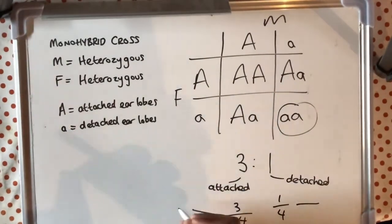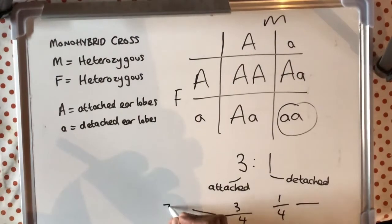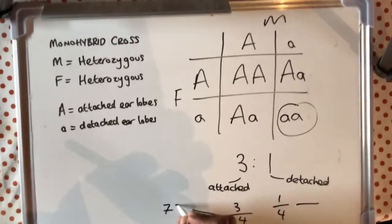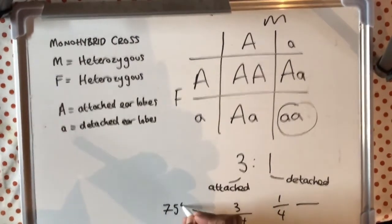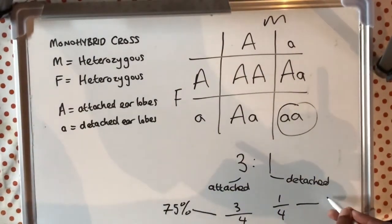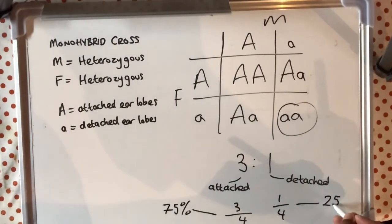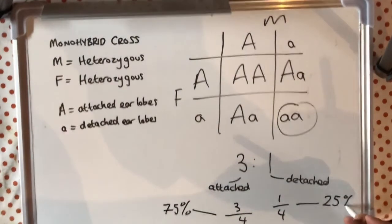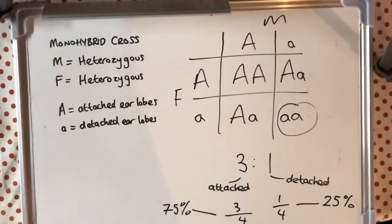I have written the ratio, but I am also going to show you what the probabilities would be as a percentage. If it is 3 out of 4, that would be a probability of 75%. And of course, if it is 1 out of 4, that would be 25%.